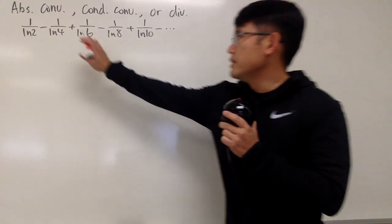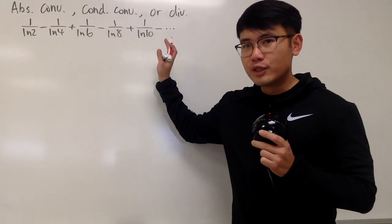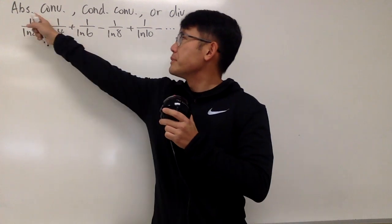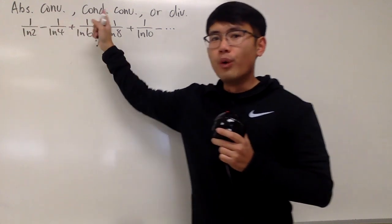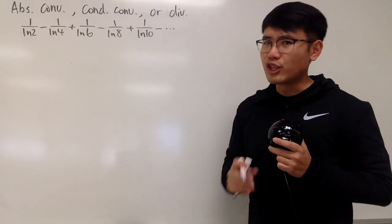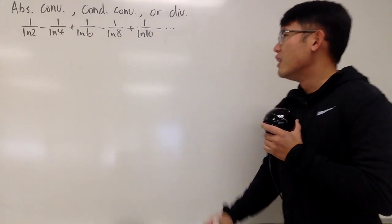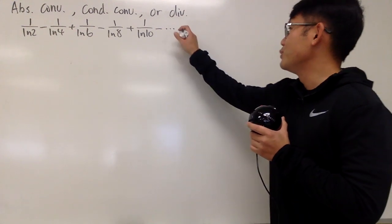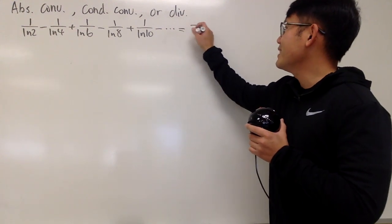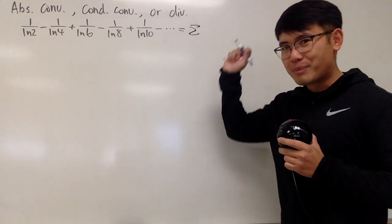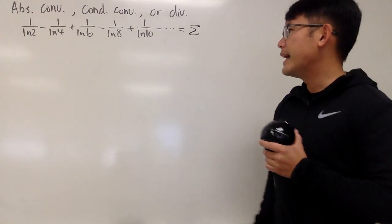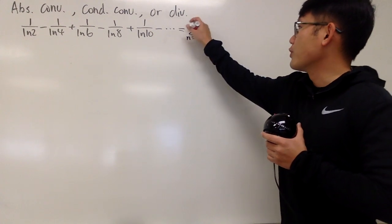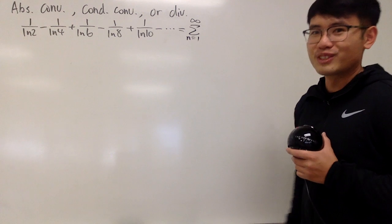In this video, we're going to see if this series converges or not, and better yet, we'll see if this is absolutely convergent or conditionally convergent. First of all, let's put this into the form that we like — namely sigma notation. We have the sum where n goes from 1, and because it keeps on going forever, it goes to infinity.